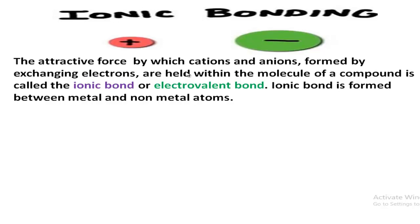Ionic bonding: the attractive force by which cations and anions, formed by exchanging electrons, are held within the molecule of a compound is called the ionic bond or electrovalent bond. Ionic bond means the attraction force by which a positively charged cation and a negatively charged anion are held together in a molecule. Generally, ionic bond is formed between metal and non-metal atoms.